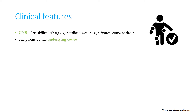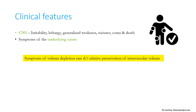Clinical features related to the central nervous system are irritability, lethargy, generalized weakness, seizures, coma, and even sudden death. Symptoms of the underlying cause will also be present, but symptoms of volume depletion are very rare even in hypovolemic hypernatremia, due to relative preservation of intravascular volume and maintenance of skin turgor. Therefore, one must not rely on skin turgor for assessing dehydration in hypernatremia.